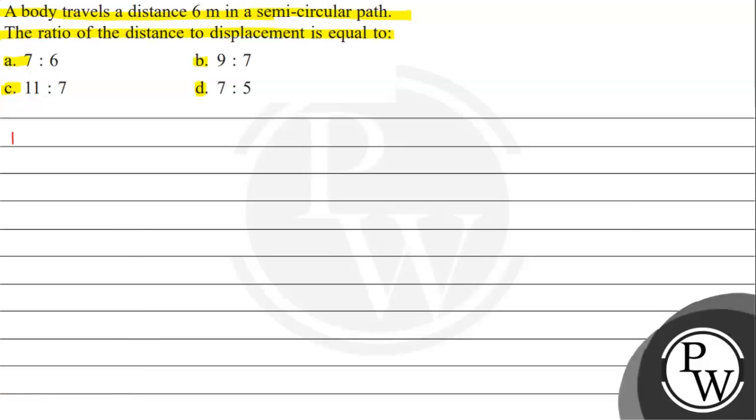The key concept we need to understand for this question is displacement and distance. Basically, we'll look at the difference between the two and use their basic definitions to analyze the situation. We will talk about displacement - it is the shortest distance between initial and final position.